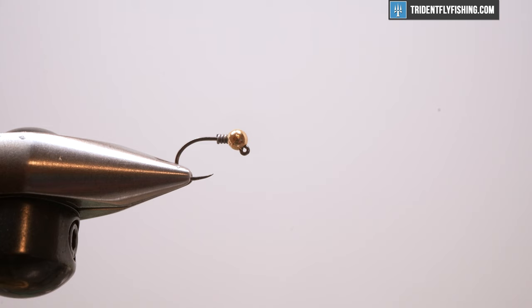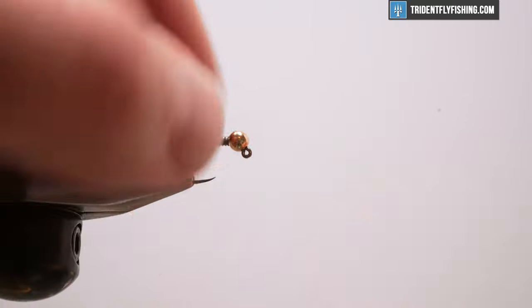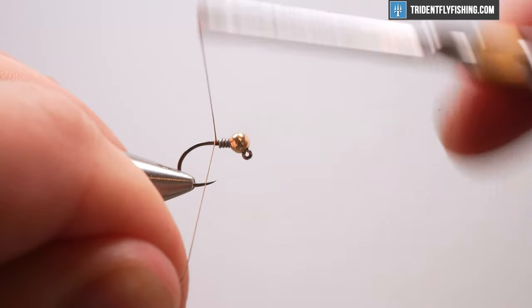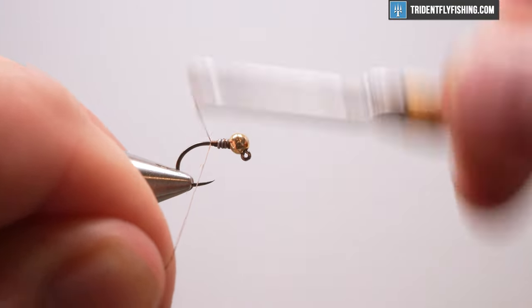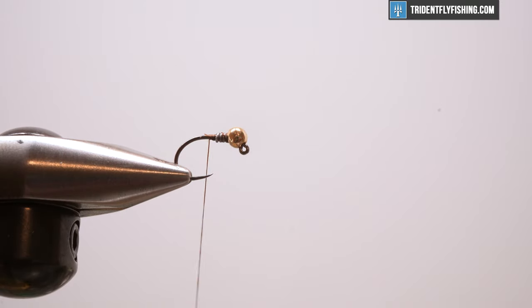The next thing I'm going to do is just start my thread. For thread today I'm using Uni 6-ought in brown. You could use a number of brown threads. UTC is good because it's flat. I just have this Uni today. We're going to start our thread right behind this lead, and this is going to help push that lead right up against the bead so it doesn't go anywhere. Let's get rid of our little tag. The next thing I'm going to do is tie on my tail.